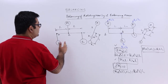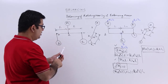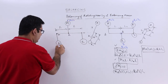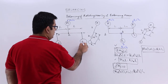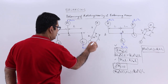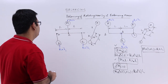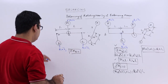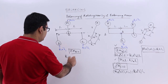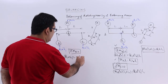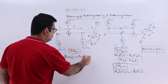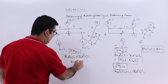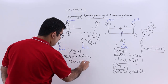Now for the case where the balancing masses are on the opposite side of the disturbing mass. The centrifugal forces are M·ω²·r, B1·ω²·b1, and B2·ω²·b2. Taking the moment about point B and setting it equal to zero, then cancelling ω², gives the first condition: B1·b1·L1 = B2·b2·L2.